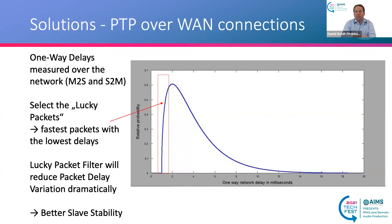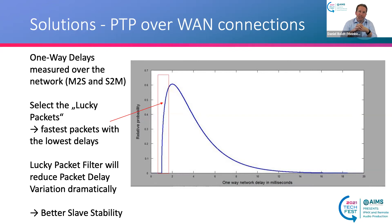What does the slave do to mitigate these problems? First, all the one-way delays measured over the network are collected statistically and put into a ring buffer. The slave then selects the so-called lucky packets — the fastest packets with the lowest delays — because the fastest packets are supposed to be least affected by queuing delays within switches and most likely represent the real delay. The lucky packet filter reduces packet delay variation dramatically by discarding all high-delay packets and using only the fastest ones.